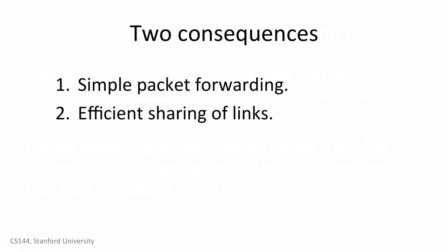The second property is that packet switching lets a switch efficiently share a link between many parties. For example, consider a wireless router in a home with two people browsing the internet on their laptops. If one person is reading a page, then the other person can download a file at the full speed of the link. If the first person starts loading a web page, the link can be shared between the two of them. Once the download completes, the first person can use the full speed of the link. These two points are really important, so we'll go into some greater detail on both of them.